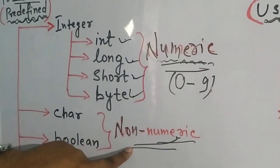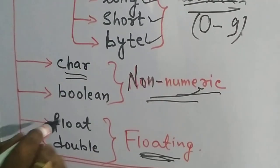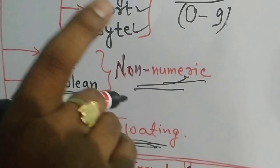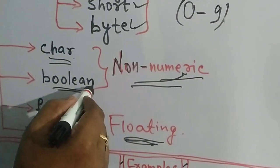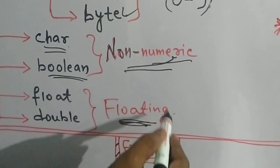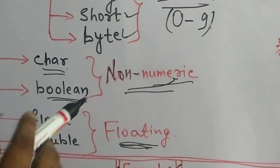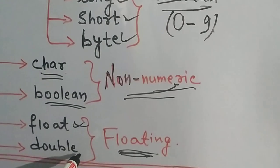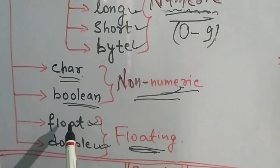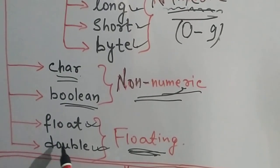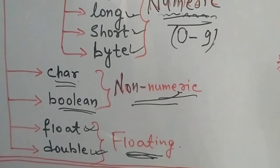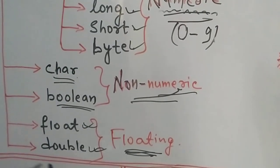Non-numeric types are of two types: char and boolean. Char contains characters — a single character that will be in between single quotes. Boolean contains true or false. The third category is floating, which means decimal or fractional values. Floating is of two types: float and double. Float is generally used for small decimal values, and double is used for big decimal values like 2.111111.